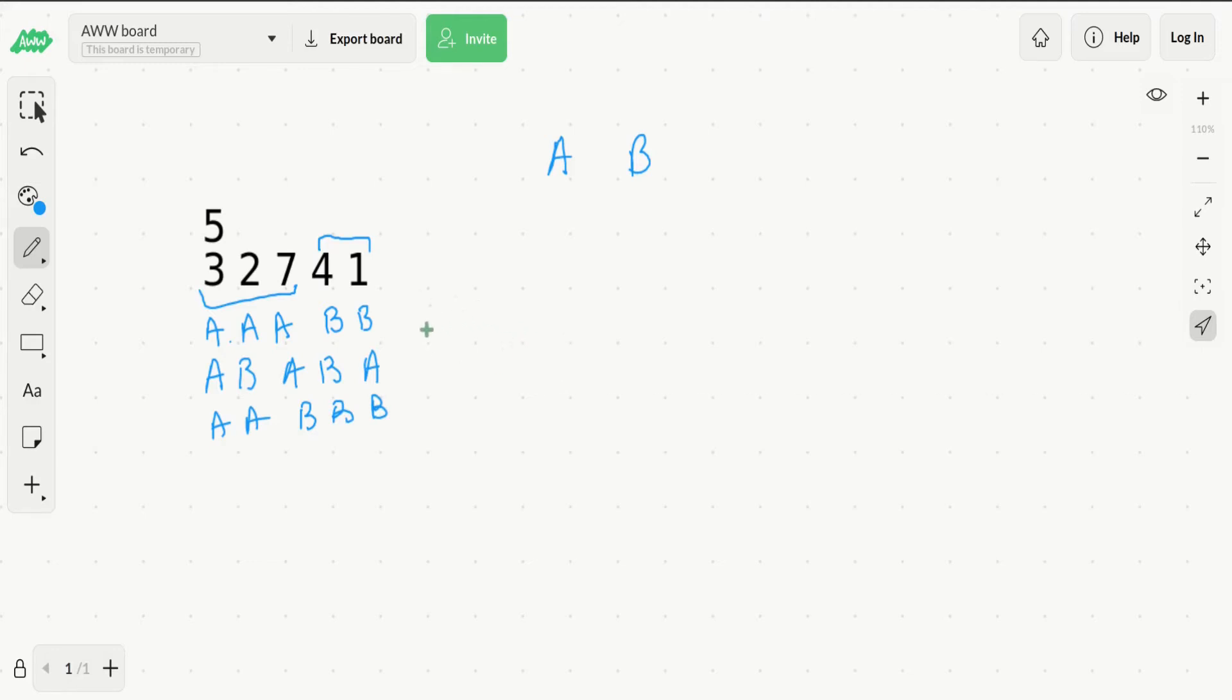If we notice, these strings only contain 2 characters which are A and B. This is reminiscent of binary strings, which also only contain 2 characters, 0 and 1. Instead of writing A and B, we could say that A is 0 and B is 1.